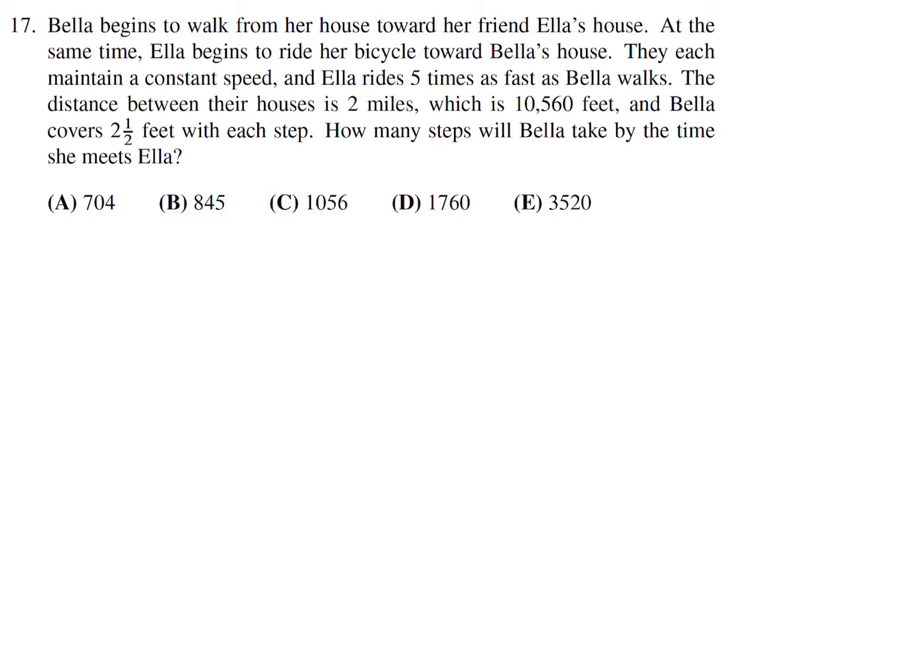Bela begins to walk from her house toward Ella's house. At the same time, Ella begins to ride her bicycle toward Bela's house; they each maintain a constant speed and Ella rides 5 times as fast as Bela walks. The distance between their houses is 10,560 feet, and Bela covers 2½ feet with each step. How many steps will Bela take by the time she meets Ella?